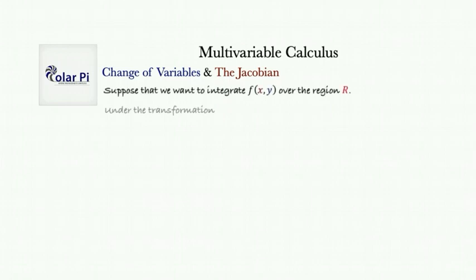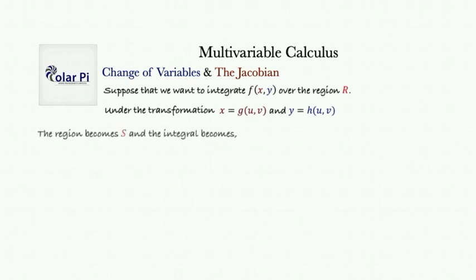Suppose that we want to integrate some function of two variables f(x,y) over region R under the transformation x = g(u,v) and y = h(u,v). The region R is going to turn into S and the integral becomes the following.